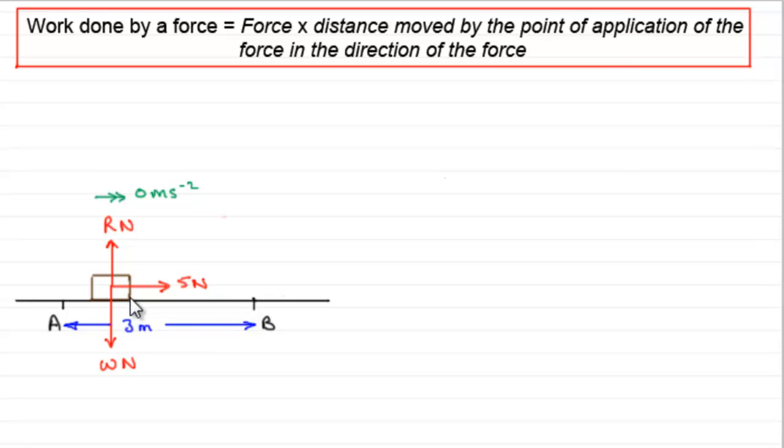Now suppose we put the particle on a rough plane. There will be friction. Friction will act in the opposite direction to motion, so it's going to act to the left. We'll just say that's F newtons. It's still going to move at a constant speed to the right. Now a typical question that you're going to get for something like this will be, find the work done against friction in moving from A to B.